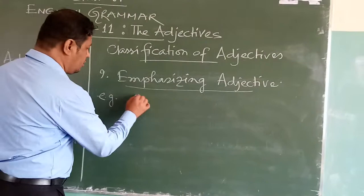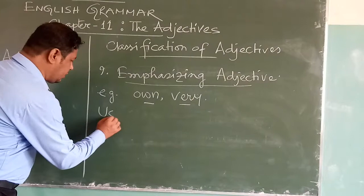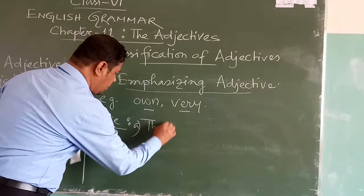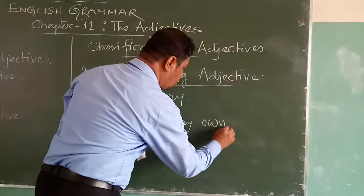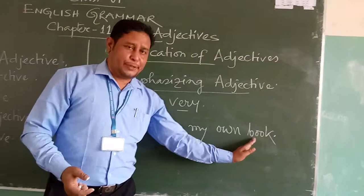There are only two examples for emphasizing adjective: 'own' and 'very'. The first example: 'That is my own book.' Here the word 'own' emphasizes the book — you are specifically telling that this book is yours. That is why it is an emphasizing adjective, as it qualifies and emphasizes the noun 'book'.